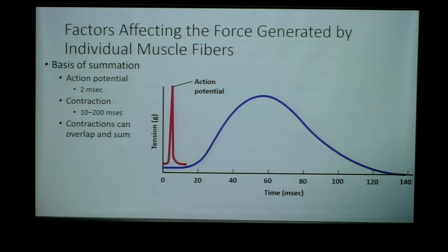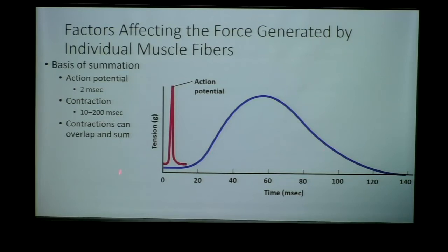In summation, we do not have full muscle relaxation in between contractions, so all the calcium does not leave the cytoplasm, which explains why the subsequent contraction is stronger and generates a little bit more force. An action potential is around one to two milliseconds, while a contraction can last anywhere from 10 to 200 milliseconds. In that time, we can have several action potentials being fired onto the muscle, and this is the basis of summation.